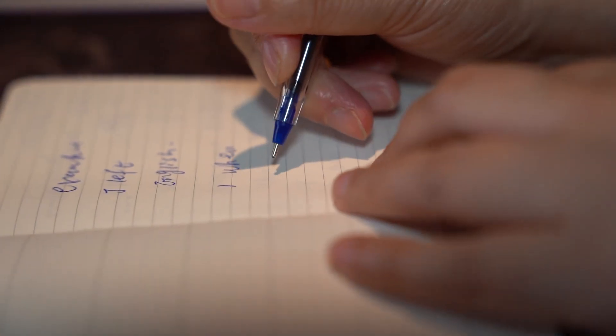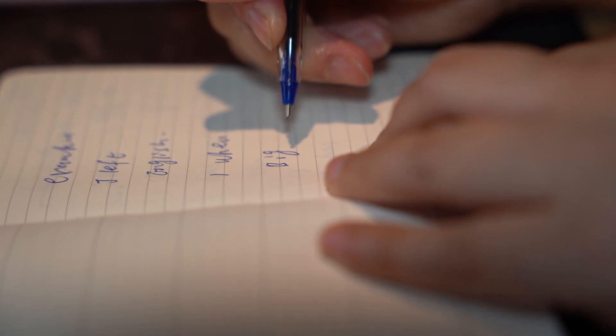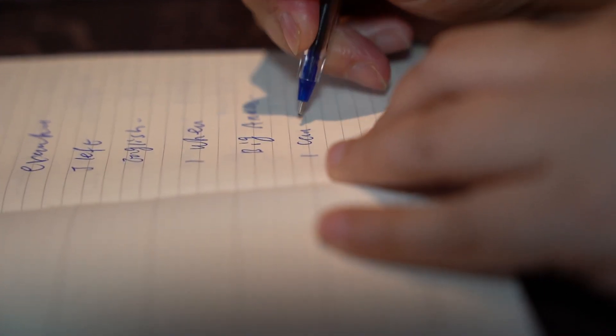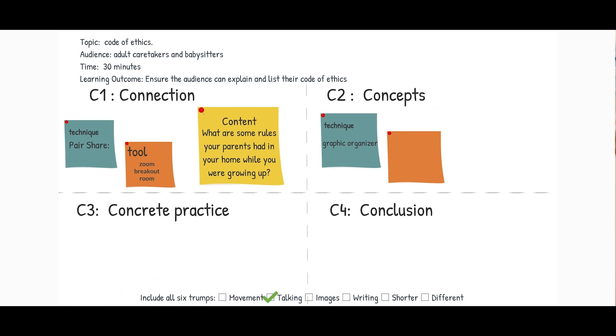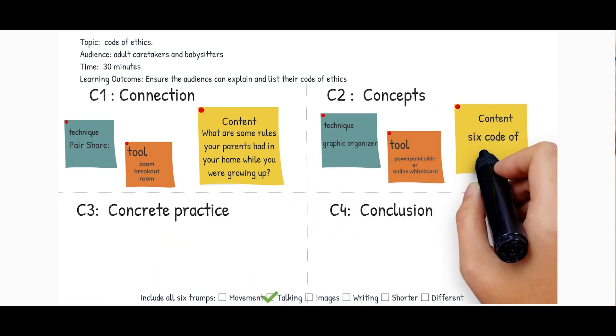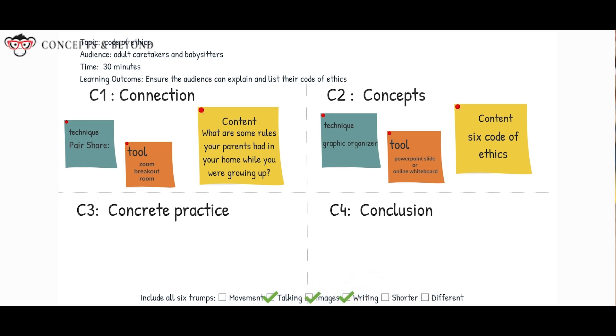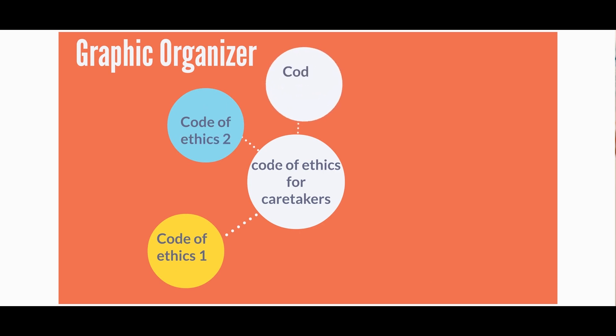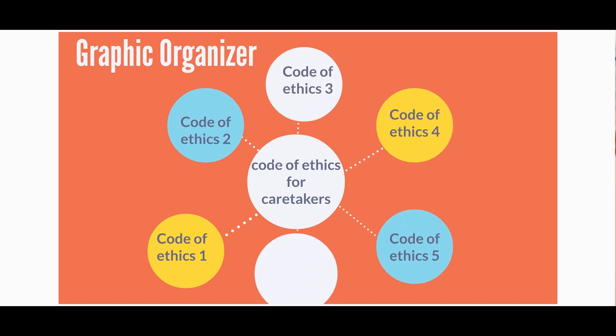Let's say there are six codes of ethics and we create a graphic organizer that has a picture representing each one. Some effective techniques I've used include interactive lectures paired with a graphic organizer, where learners write or draw as the trainer speaks, or a concept center where learners match different concepts and check answers by opening an answer key. The technique I'm going to use is a graphic organizer. The tool will be a PowerPoint slide or an online whiteboard like Miro or Mural. The content is the six codes of ethics, while learners write on the graphic organizer and connect each code with the corresponding drawing.